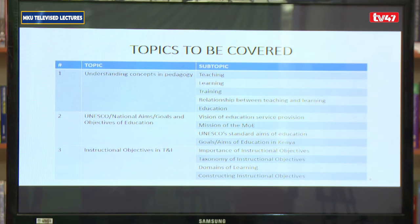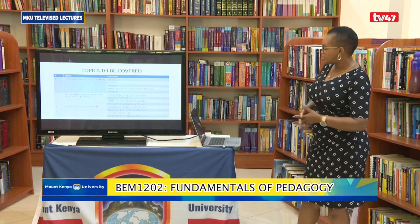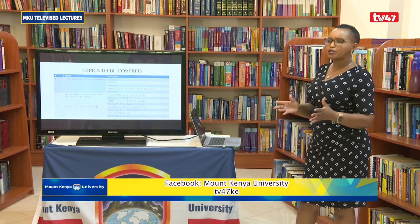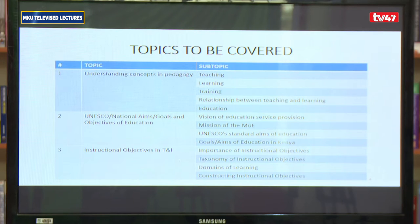We'll also be looking at education, which is an umbrella to all of those — teaching, learning, and training. What do we mean by education? We'll also be looking at UNESCO national aims, goals, and objectives of education. We have international declarations that define education, we have policies, and we have national goals that define education. In whatever we do, we have to be in line with international declarations and the goals of education.